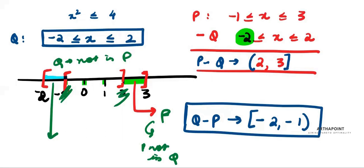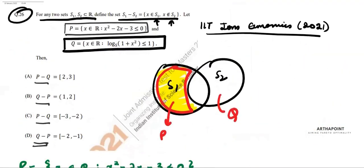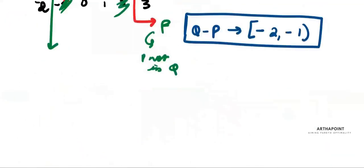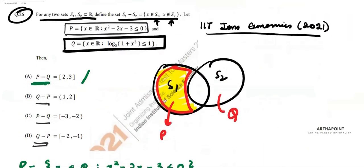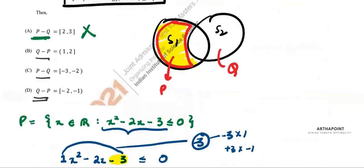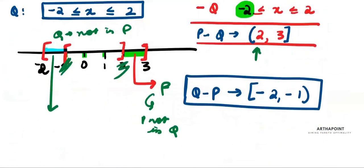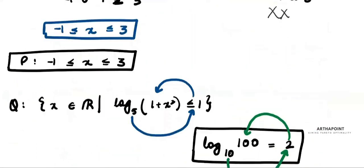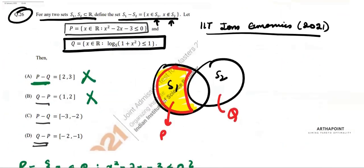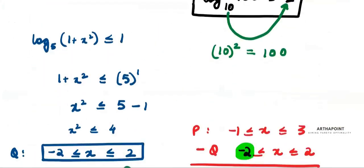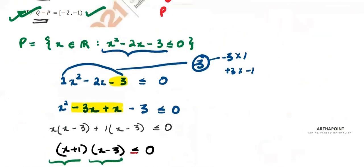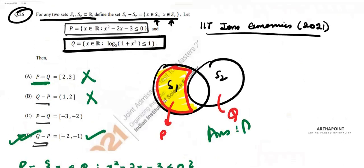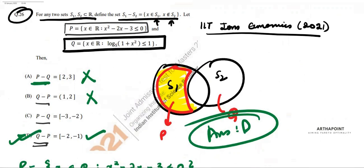Now let's check the options. P minus Q is (2, 3] — not the option showing [2, 3] since 2 is not included. Q minus P: one option says [-2, -1), which is correct. Checking all options, the correct answer is D. Thank you.